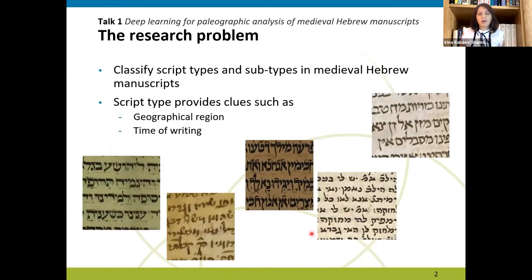The problem is to automatically classify script types and subtypes in medieval Hebrew manuscripts. A script type classification can provide a clue about when and where the document was written, and this information is vital for damaged, undated, or incomplete documents. Also, an automatic classifier will help classify large collections of documents or even big archives where there is no expert in Hebrew paleography or where we have less accessible archives.